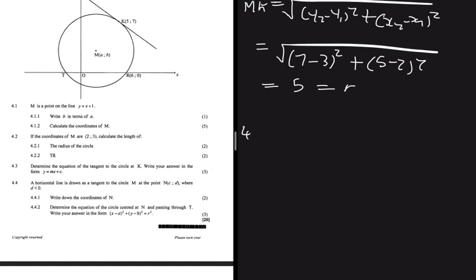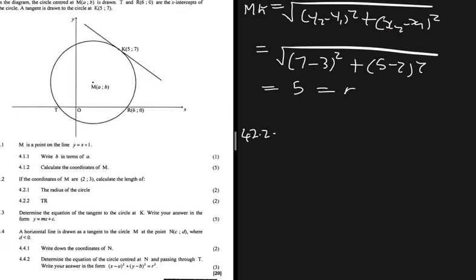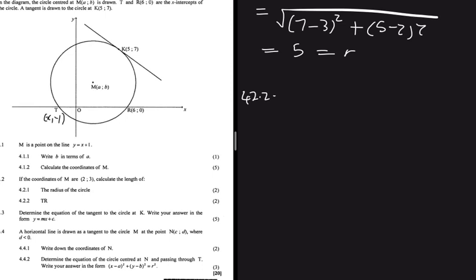For 4.2.2, calculate the length of TR. To do this, we can use the coordinates of T and R with the distance formula. T lies on the x-axis as an x-intercept, so T has coordinates (x, 0), and R is (6, 0). If we can calculate the x-value of T, we can determine TR.